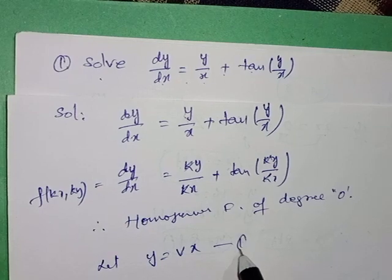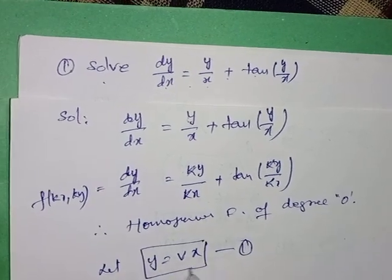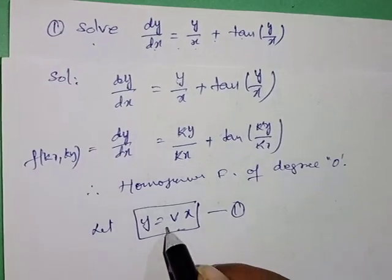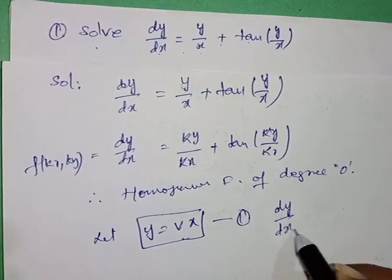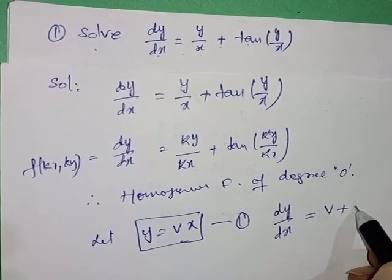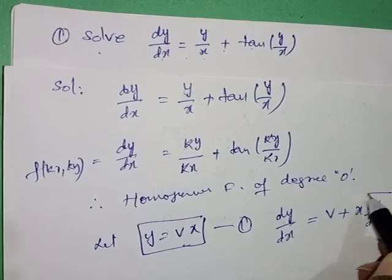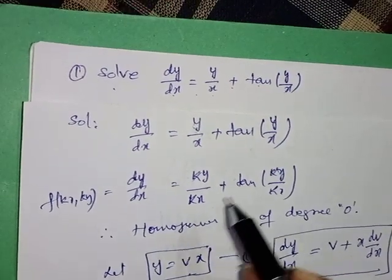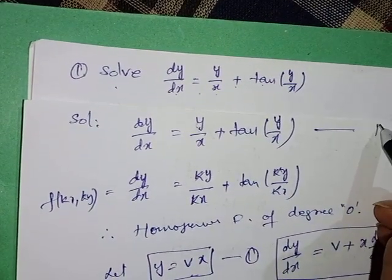Let y = vx — consider this equation number one. Differentiating, dy/dx = v + x·dv/dx — consider this equation number two.